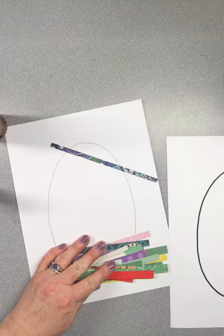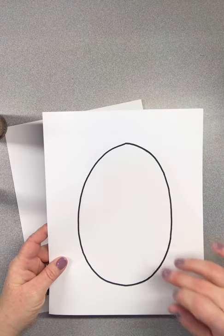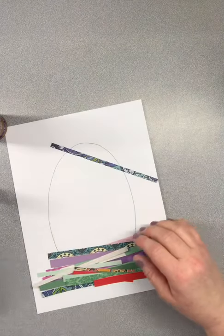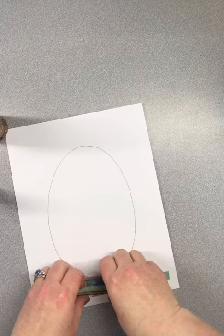So I did one egg that I outlined in marker because this egg we're going to cut out and I set that one to the side, and this one I just did in pencil. This is the one we're going to glue.